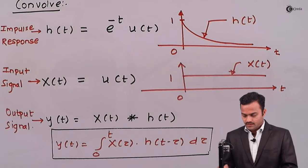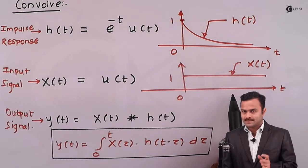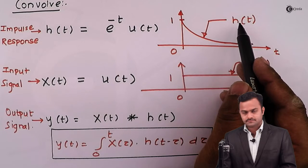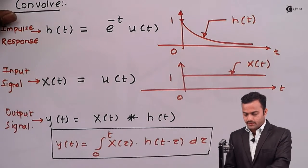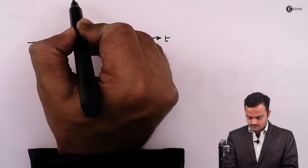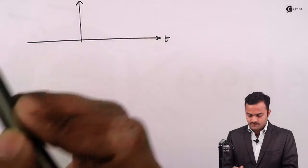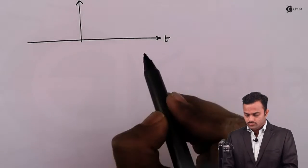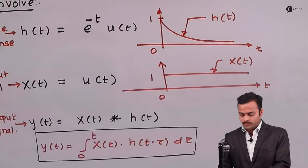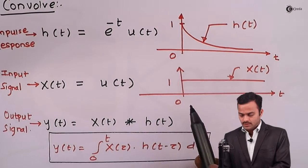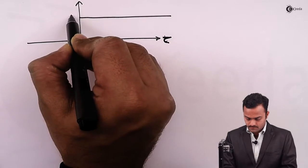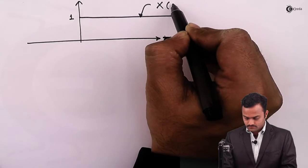The first step is to replace t by τ. At the same time we perform a time reversal of h(τ). The t-axis becomes the τ-axis. We keep x(τ) as it is, and take the time reversal of h(τ) to get h(-τ).